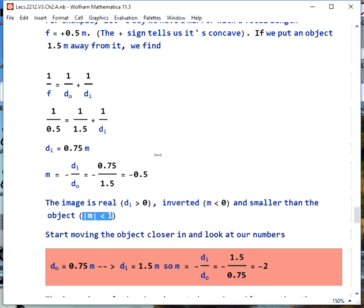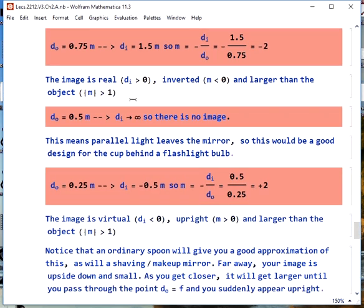Let's start moving the object closer in, and watch what happens to our numbers. When we get into 0.75 meters, we solve the thin lens equation, and we get DI is 1.5 meters, M is negative 2. This means a real image, because DI is positive. It's inverted, because M is less than 0, and it's larger than the object, because the absolute value of M is greater than 1. If we move the object to 0.5 meters, one focal length away, we get that DI approaches infinity, so there is no image, and we get parallel light out of the mirror. This would be a good way to design a flashlight. We put this mirror, this concave mirror, behind the bulb, this far back, one focal length back, and we get a nice parallel beam coming out.